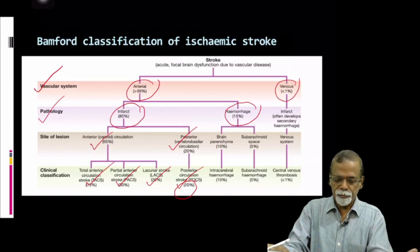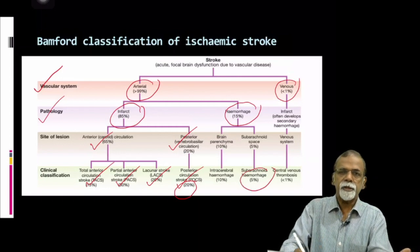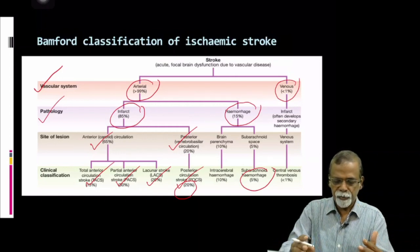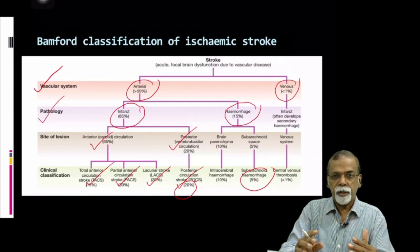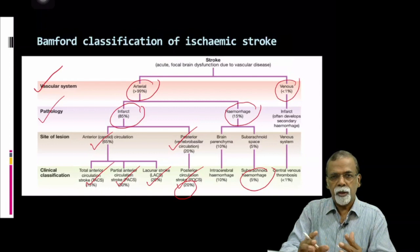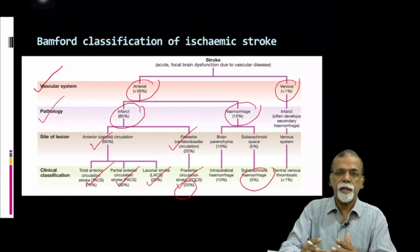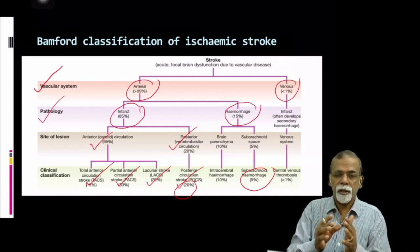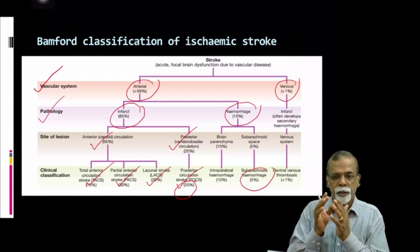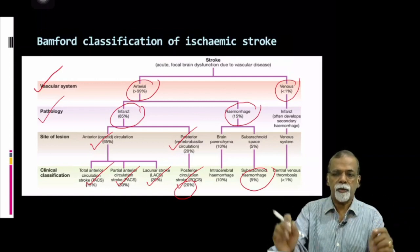When you take intracranial hemorrhage, 5% is in the subarachnoid space and 10% is in the brain parenchyma. So of the total 15% of hemorrhagic stroke, 10% is intracerebral and 5% is subarachnoid. So of the total stroke, 10% is intracerebral and 5% is subarachnoid.